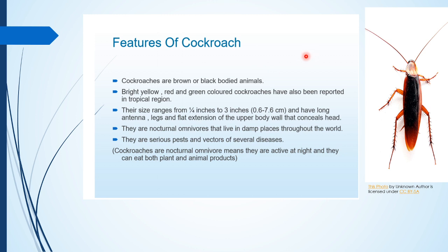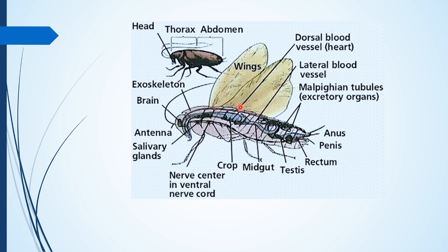General features — the external features of Cockroach. These are brown or black in color, and some of these are yellow, red, and green color. Their size varies from 1/4 inch to 3 inches, that is 0.6 cm to 7.6 cm long. They have long antennae and compound eyes. These are nocturnal and omnivores — they eat both plant and animal products. Generally, they are worldwide in cold areas or damp places. They are serious pests and vectors of several diseases.